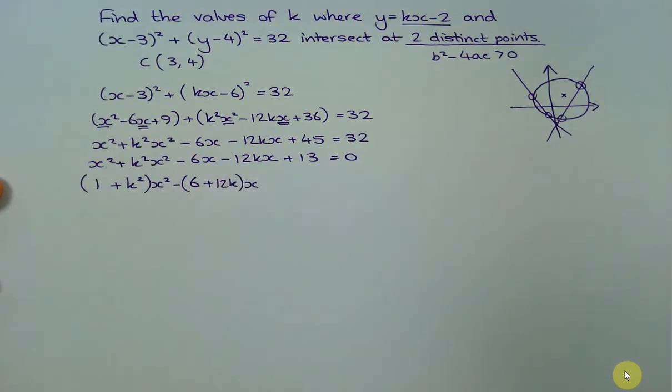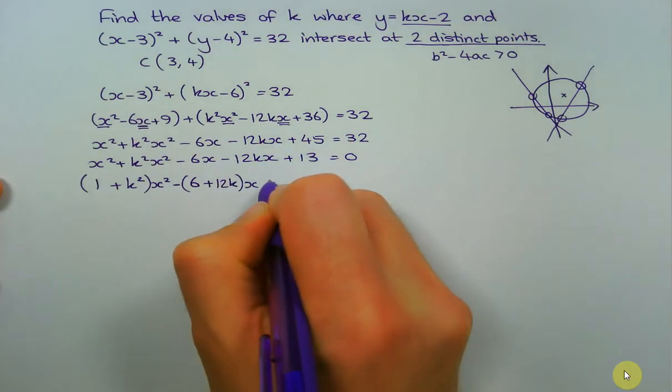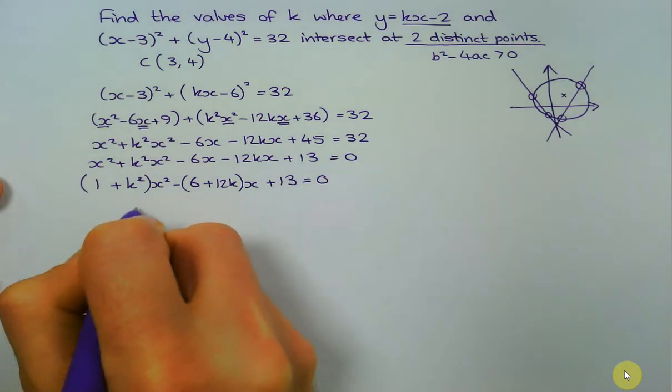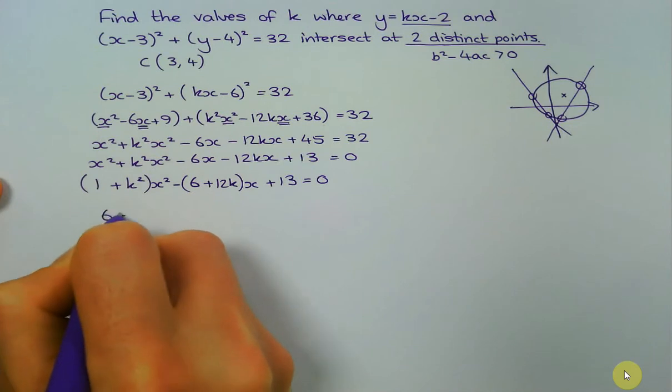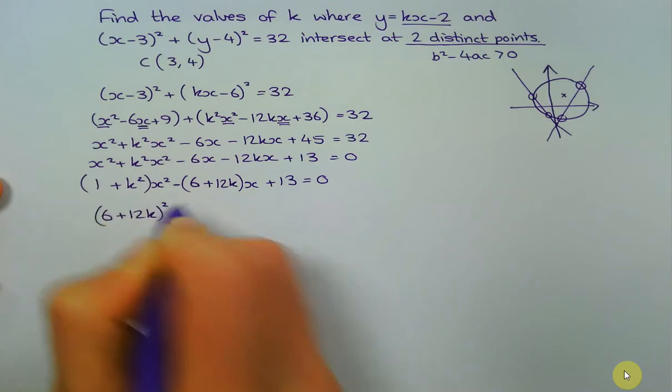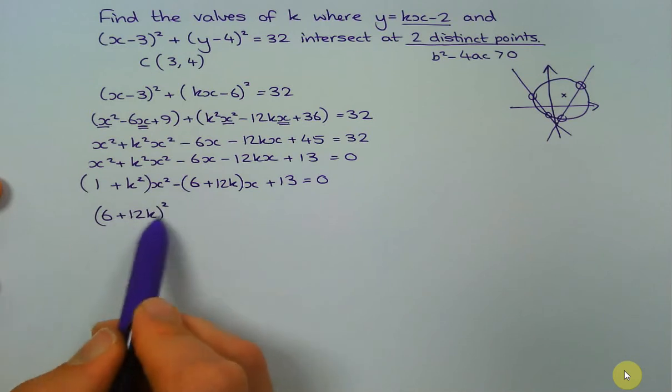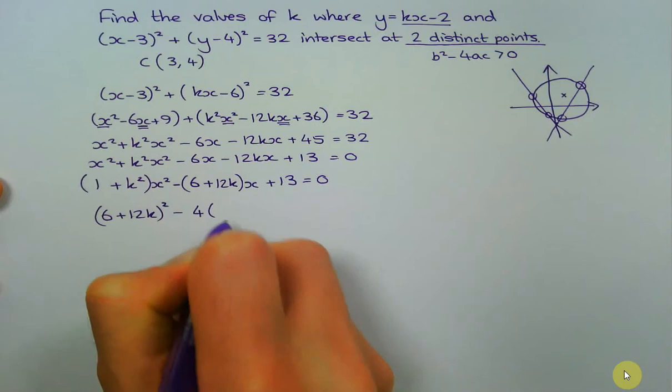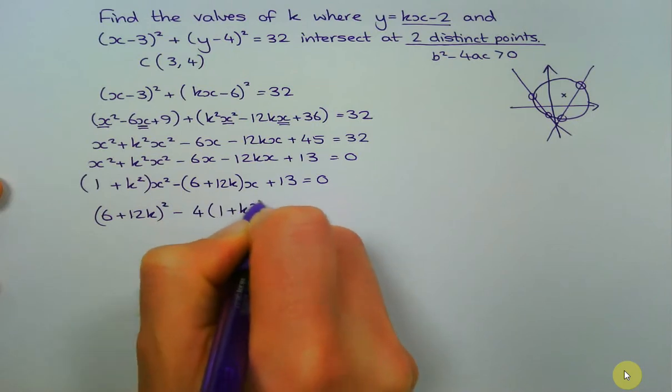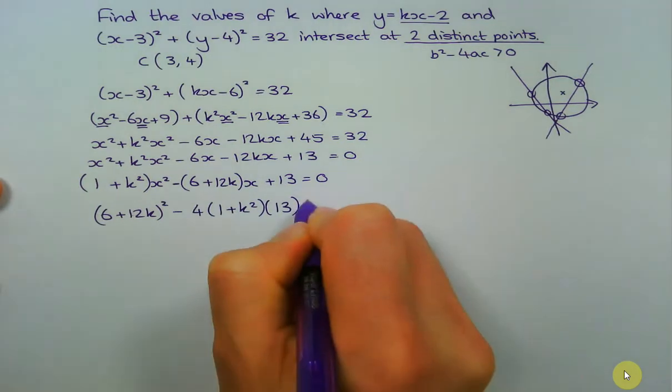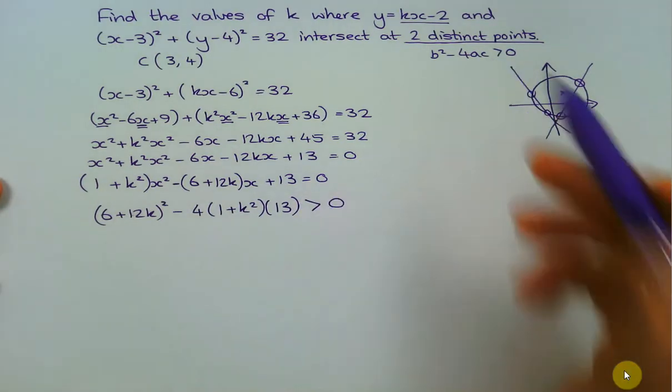Now that is still not ready. So b² - that's going to be (6 + 12k)². You'll notice I completely ignored that negative because when you square it in b², it's actually going to be positive anyway. So b² - 4 lots of a, which is that, and c, which is 13. And now I can change it to greater than 0 using my discriminant.